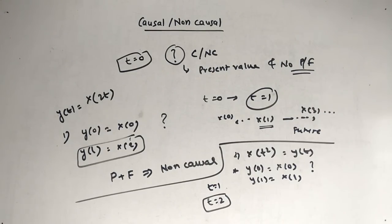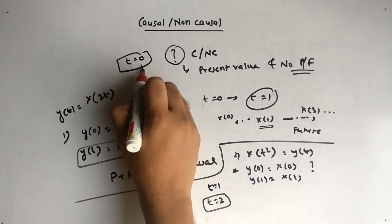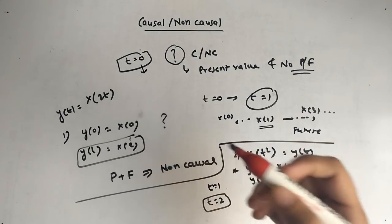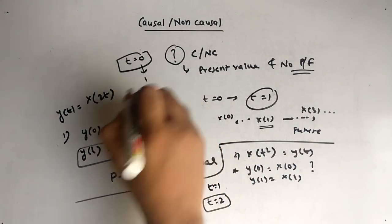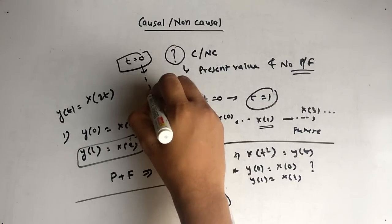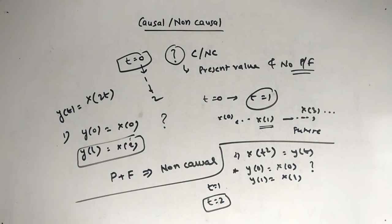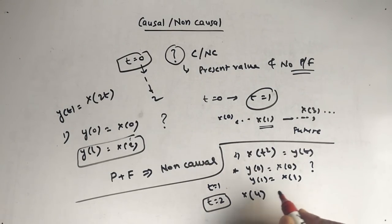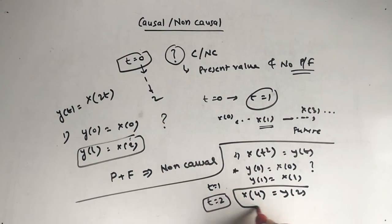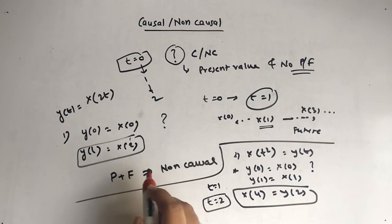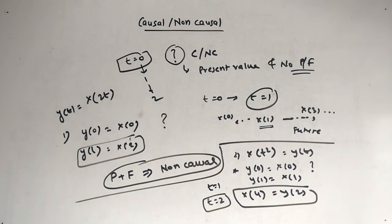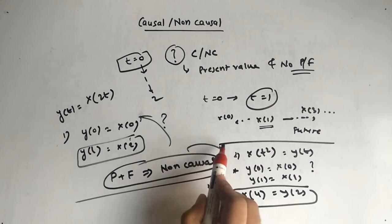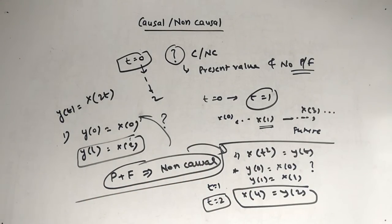Whenever you fail to get an answer at t equal to 0, then try t equal to 1. If you still can't identify whether it's future or past, go for t equal to 2, and so on. When you put t equal to 2, you get y(2) = x(4). Now you can see it depends on future. So present plus future is non-causal. Both x(2t) and x(t²) are non-causal systems.